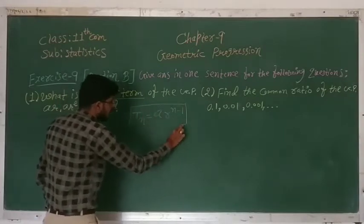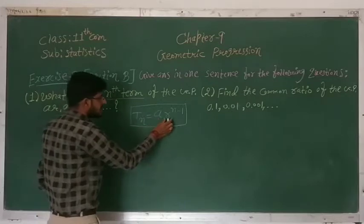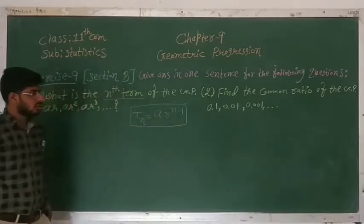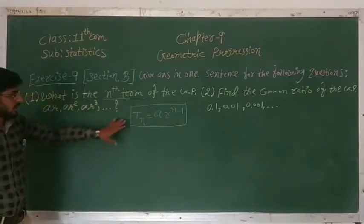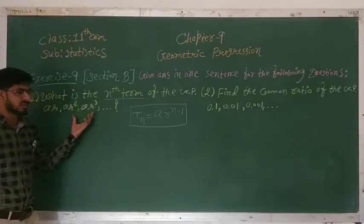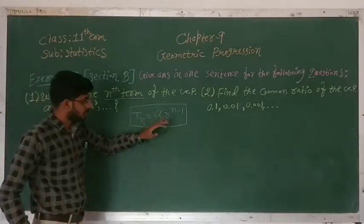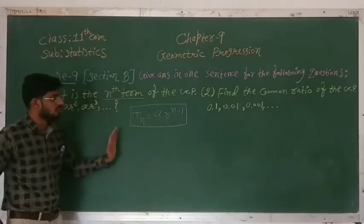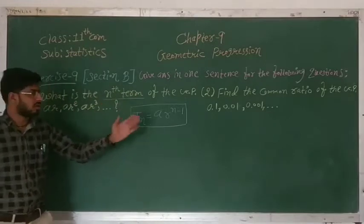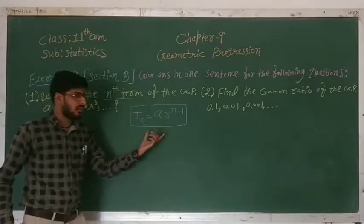Where A is the first term and R is the common ratio. So in the given GP, first we have to find out the first term and common ratio, then put their values into this formula.